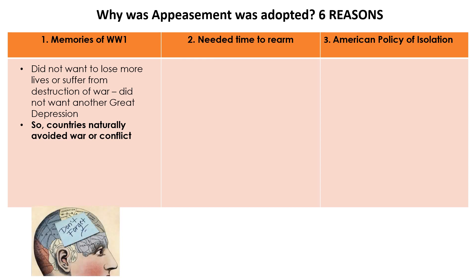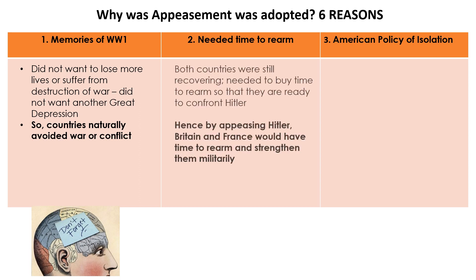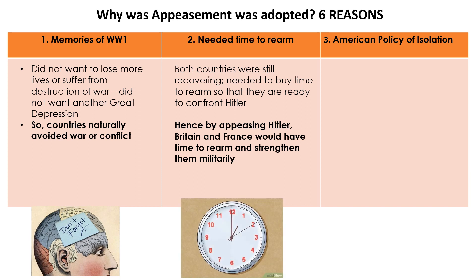At the same time, while it seemed as if Britain and France did not want to take part in anything happening beyond their countries, another reason was definitely that they needed to buy time. They were still recovering from World War I. So by giving in to Hitler — by appeasing Hitler — the whole idea was to buy time and to rearm. Rearm means to buy or to get more weapons, to make sure that their people, if they needed to go to war, they would be ready.